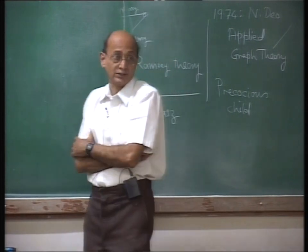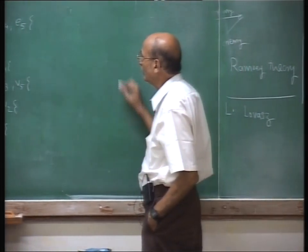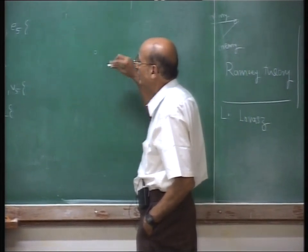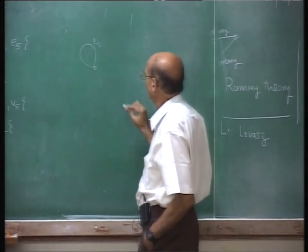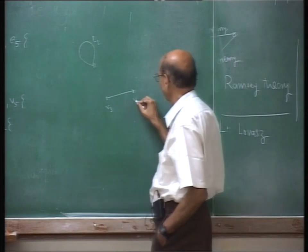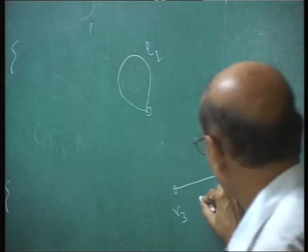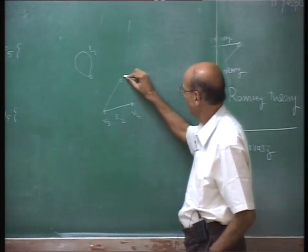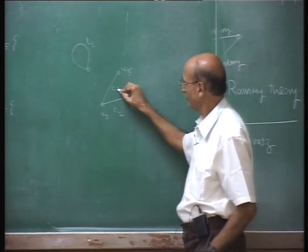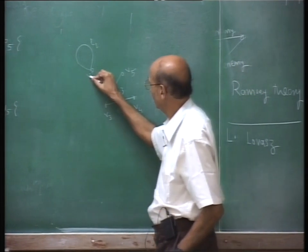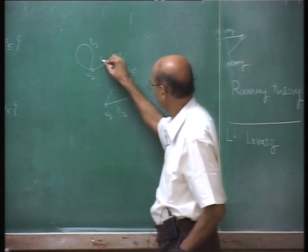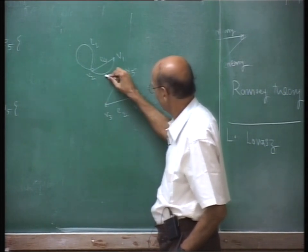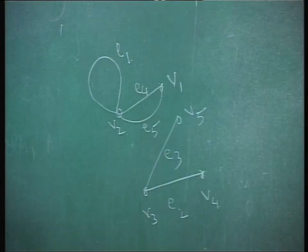What matters for a graph theorist is a drawing. One should be able to draw this. Let's go one by one — the first edge is saying that V2. This is V2, this is 4. So that's a drawing of that graph.